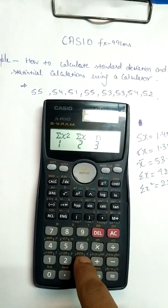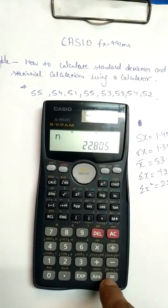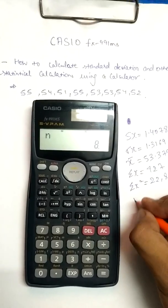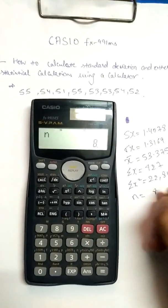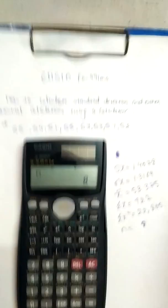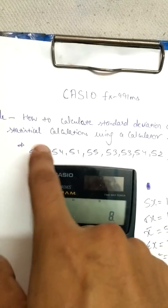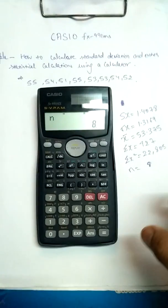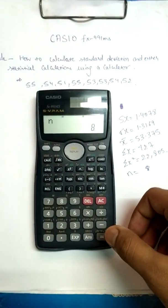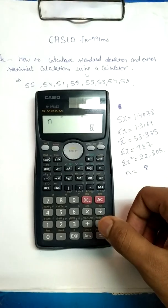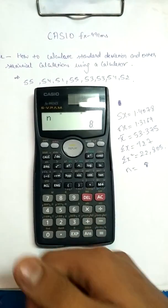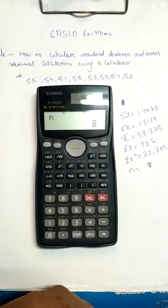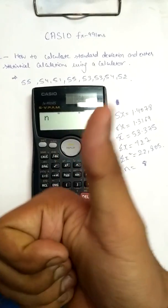Now I'll find the value of N by pressing 3 and equals. As you can count — one, two, three, four, five, six, seven, eight — N is 8. That's all for today's tutorial guys, thanks for watching. If you liked the video give it a thumbs up.